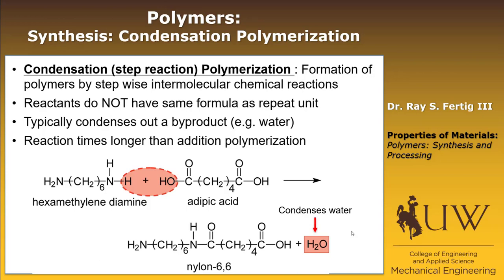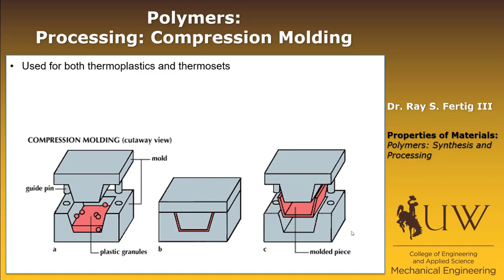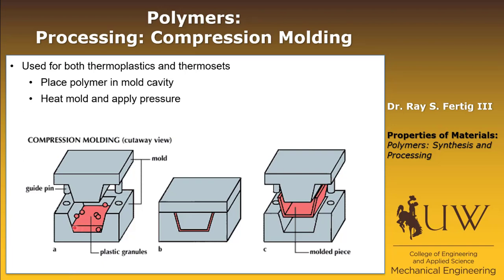That's all I want to say about polymer synthesis. Now let's talk about the processing of polymers — just the major ones. The first is compression molding, and this can be used for both thermoplastics and thermosets. First, you place the polymer in some mold cavity. Then you heat the mold and apply pressure, which liquefies the polymer and allows it to form in the same shape as the mold. Then you cool the polymer part, and you have your molded piece. It's fairly simple.